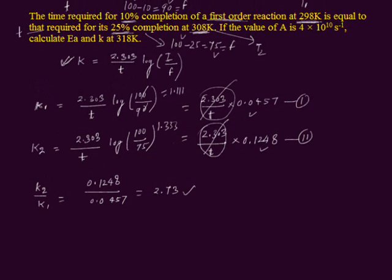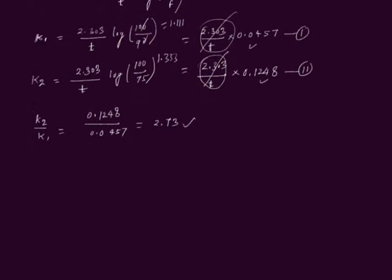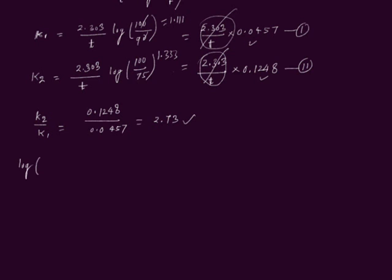The question asks us to calculate Ea, the activation energy. The temperatures T1 and T2 are given, and K1 and K2 values are known. We apply the Arrhenius equation: log of K2 upon K1 equals Ea divided by 2.303R, multiplied by 1 upon T1 minus 1 upon T2, where R is the gas constant. K2 upon K1 is 2.73, so let us plug in the values.